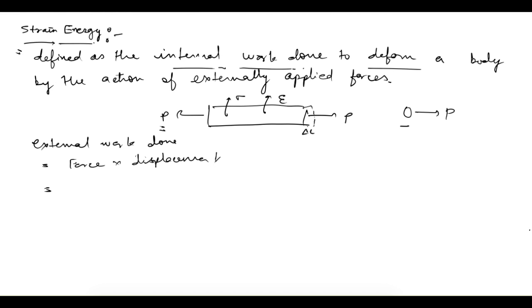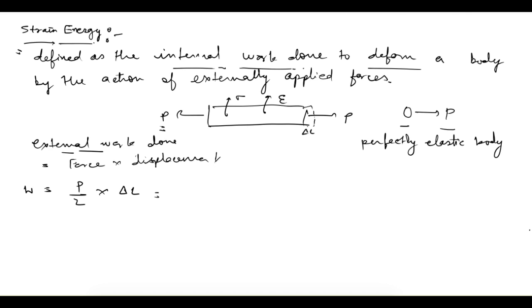The force is changing from zero to P, so the average force is P/2, and the displacement is delta L. That is your external work done. Now if we assume there is no energy loss — in other words, if this is a perfectly elastic body — then this external work done equals the internal work done. As per the definition, internal work done is the strain energy. So strain energy U equals one-half P times delta L.